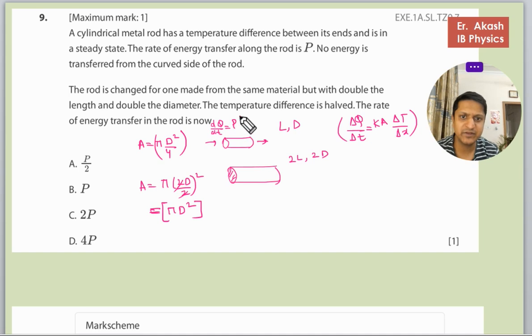P is given to us. So first we will write that P equals K. K will be the same because the material is the same, made from the same material. And the area is pi D squared upon 4.